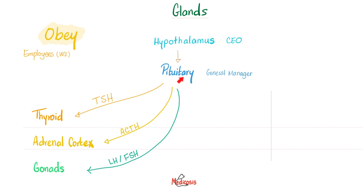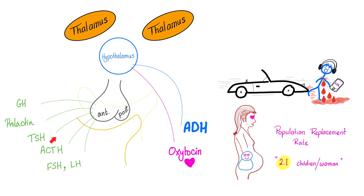How does the pituitary talk to the thyroid gland? TSH. How does it talk to the adrenal cortex? ACTH. How does it talk to the gonads — testicles and ovaries? LH and FSH. The vast majority of pituitary hormones are secreted from the anterior pituitary. Only two are in the posterior pituitary, and the posterior pituitary did not make them — the hypothalamus did. Those two are ADH and oxytocin.